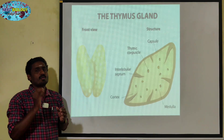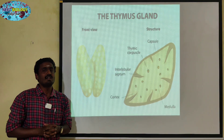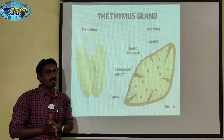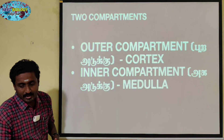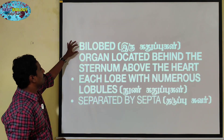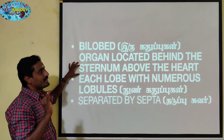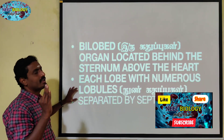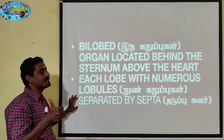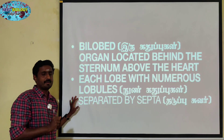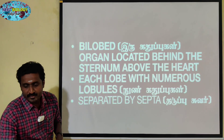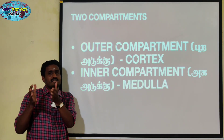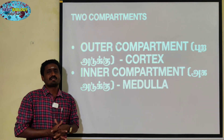We are at the next location. There are 5 points that we can see here: lobed, behind the sternum, then above the heart, then numerous lobules, then separated by septa. Next one is internal structure. Here are the location and the external structure.